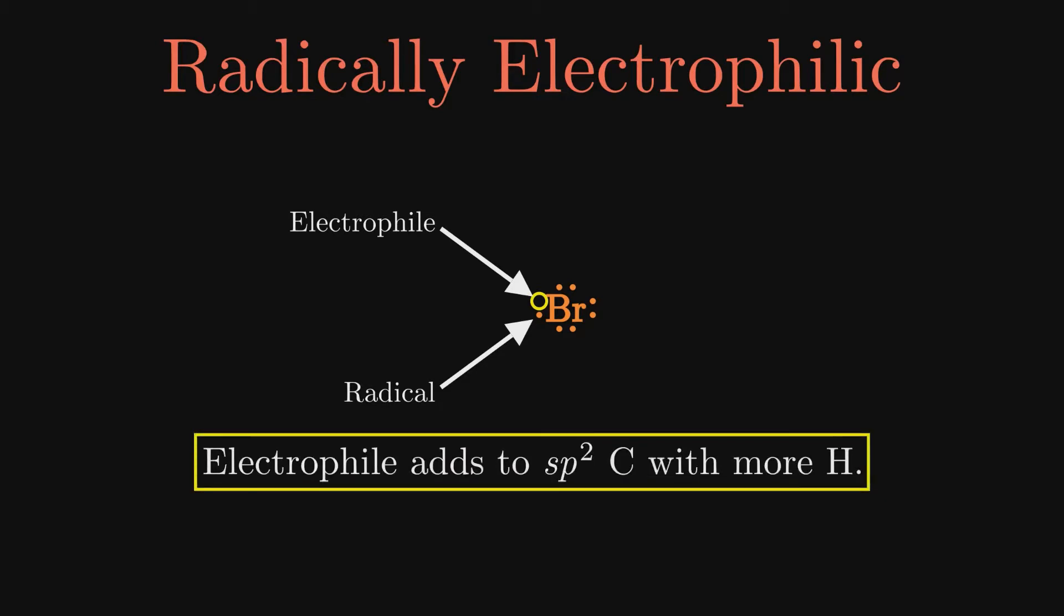We know that electrophiles add to the SP2 carbon with more hydrogens. This explains the regioselectivity of this process being the reverse of the HBr addition we encountered in the first video.